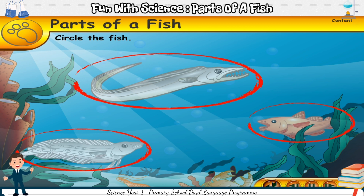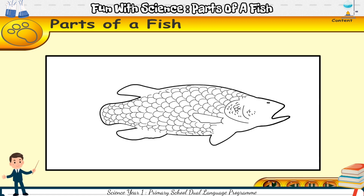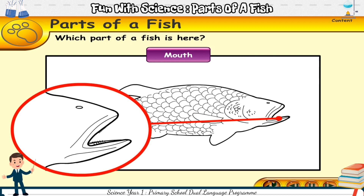Let us take a closer look at a fish. This is the outline of a fish. Let us draw the missing parts of this fish. Which part of a fish is here? The mouth is here.